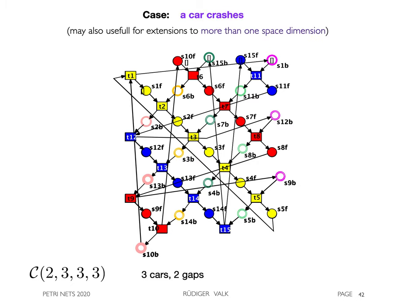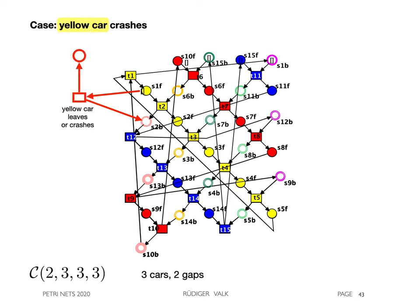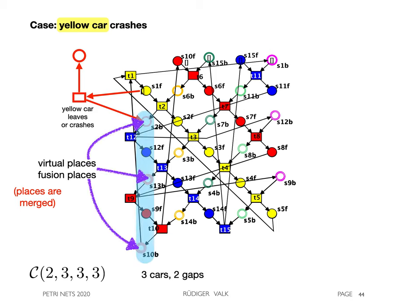By a second example, we show that our method applies also beyond T-nets. Here we have a regular cycloid for three cars and two gaps. What happens if a car crashes? In this example, the yellow car can crash. By the strong synchronization, the other cars will be blocked soon. A solution works as follows. These three places are merged as virtual or fusion places. The same is done for these groups each of three places. By this construction, we leave the class of T-nets, but are still in the Petri space, and can apply cycloid algebra. However, we have to add another morphism to merge the fusion places.